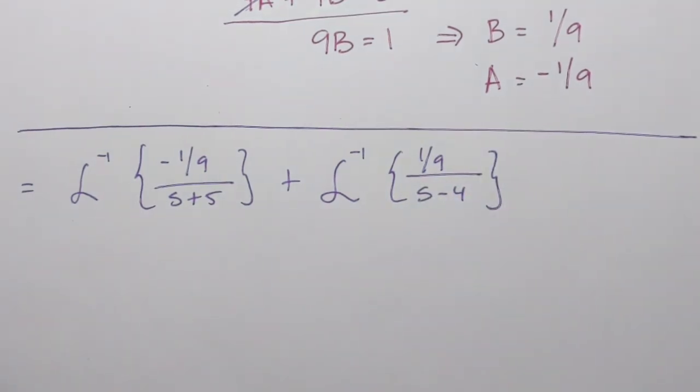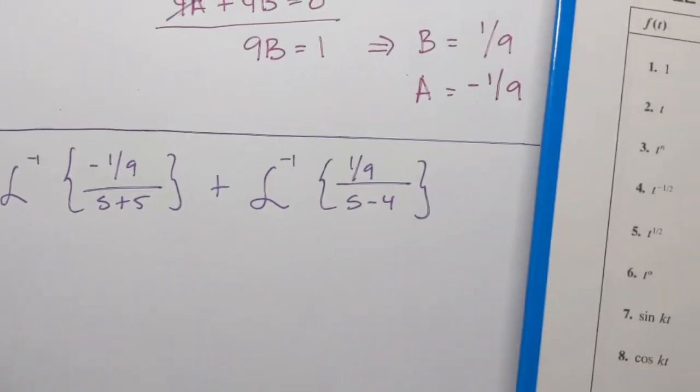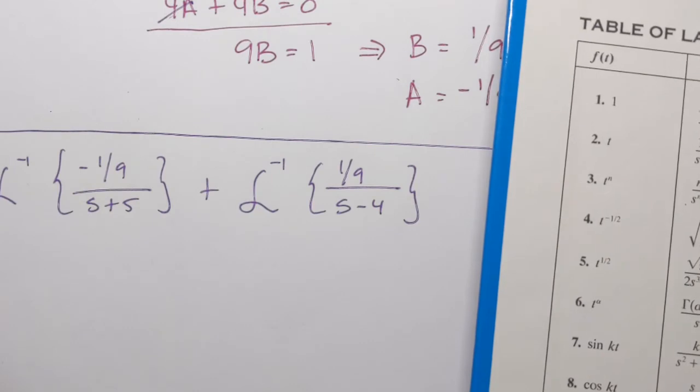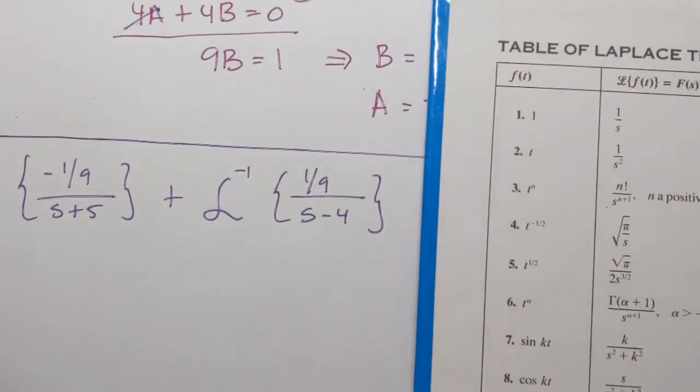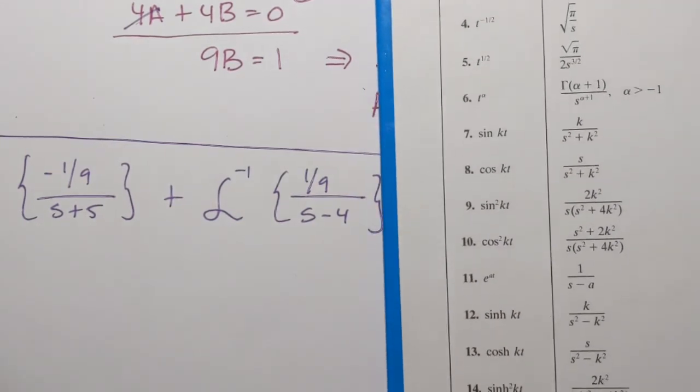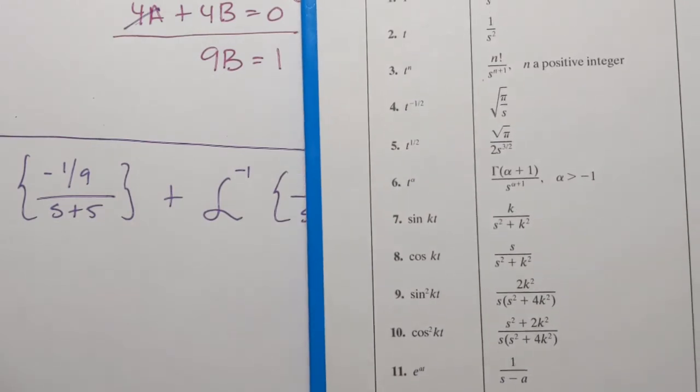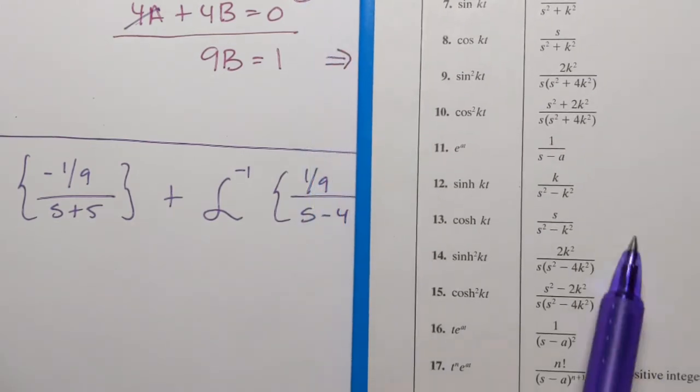So we're going to have to find inverse transform of negative 1 over 9 over s plus 5, and then add the inverse transform of 1 over 9 over s minus 4. And now I can look at the table of Laplace transform. So the way my functions look now, they have sum and difference in the denominators. Can we find one that resembles that pattern? Yes, we can.